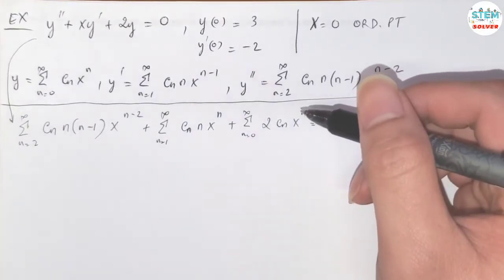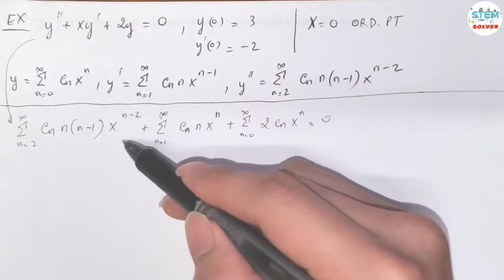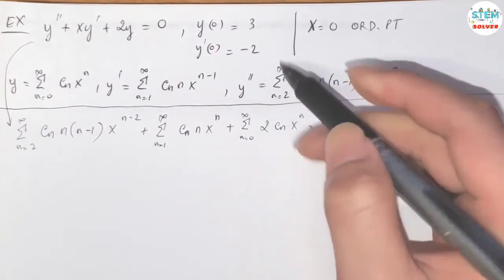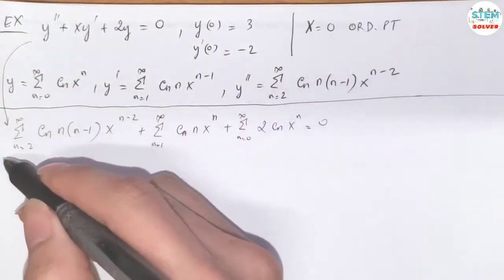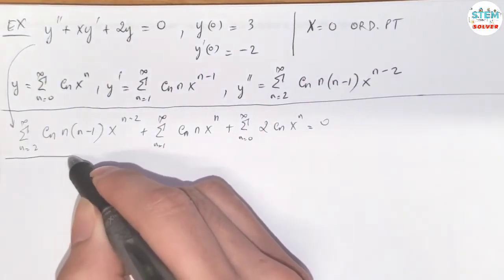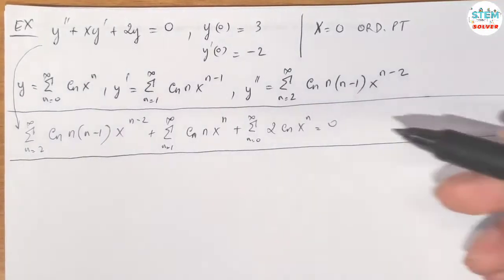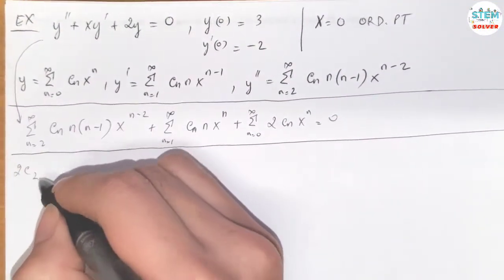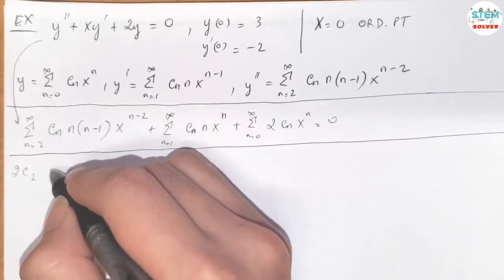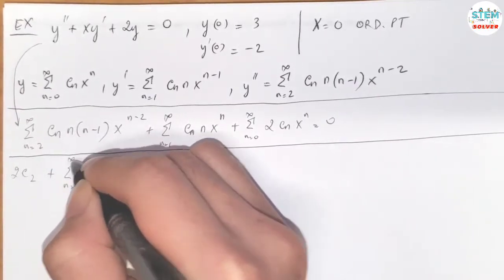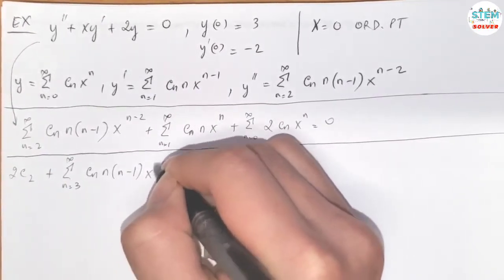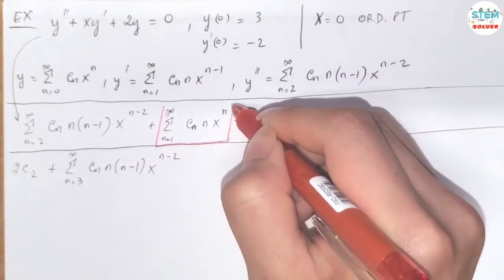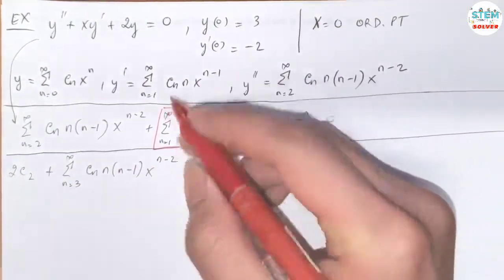Now we look at the powers. Plugging in n=2 gives x to the 0; plugging in n=1 gives x to the first; plugging in n=0 gives x to the 0. So x to the first is the highest exponent, meaning we need to run out terms in the other series until we reach x to the first. For the first series, plugging in n=2 gives the term 2c_2, plus the power series from 3 to infinity: c_n, n(n minus 1), x to the n minus 2. For the second series, it is already x to the first, so just rewrite it.